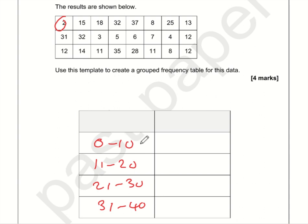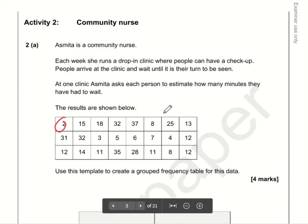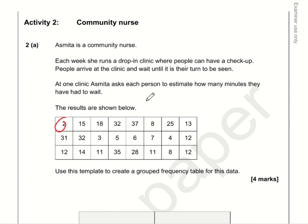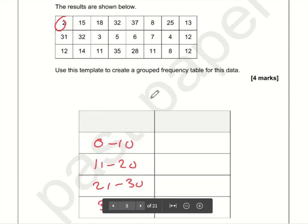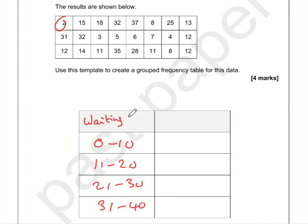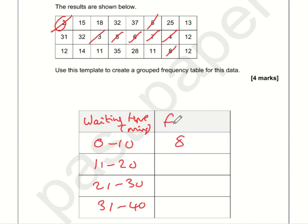These values correspond to waiting times in minutes, so let's write 'waiting time' in minutes as the header. Now let's find all the zero to 10 values: one, two, three, four, five, six, seven, eight — so the frequency for that band is eight.